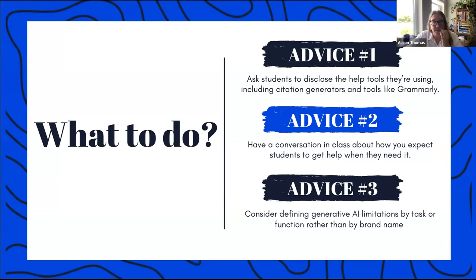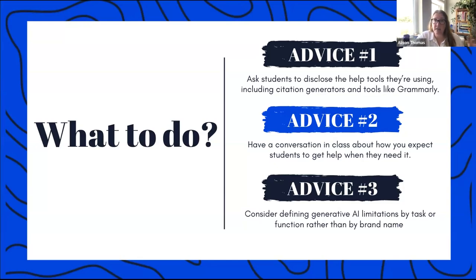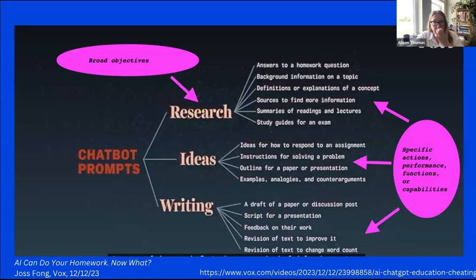The advice I've started giving is to define your generative AI policy based on the task or function rather than by brand name. What is it okay to use AI to do? What is it not okay to use AI to do? I'll point you to a Vox video from December that I recommend — I think it's in every slideshow I have now. Students get a lot out of watching it too. It breaks down what chatbots — what we've been calling generative AI — can do: get answers to homework questions, get background info on a topic, get definitions or explanations. For each assignment, you might go through and highlight which of those are okay and which are not.